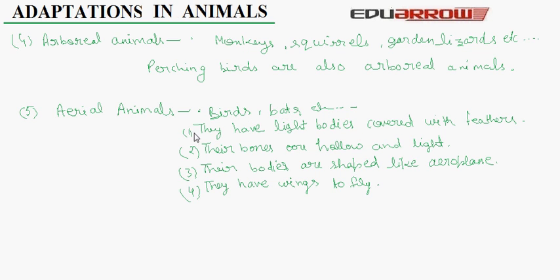Their bones are hollow and light. Their bodies are shaped like a plane. They have wings to fly. All these adaptations help them to fly. We have discussed adaptations according to surroundings.